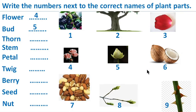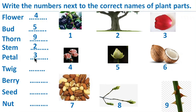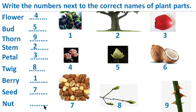Thorn — number 9 is thorn, so we write 9 here. Stem — which one is stem? Number 2. Yes, this is stem, so we write 2 here. Petal — number 3 is petal, so write 3 here. Twig — which one is twig? Number 8. Yes, 8 is new branches, or twig. Berry — number 1 is berry, so write 1 here. Seed — number 7 is seed. And at last, nut or coconut is number 6.